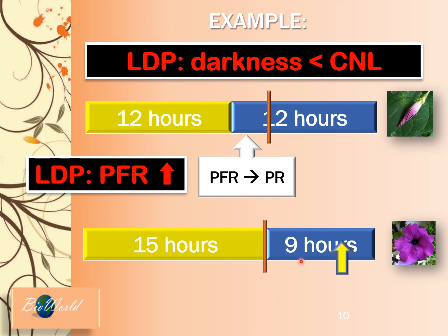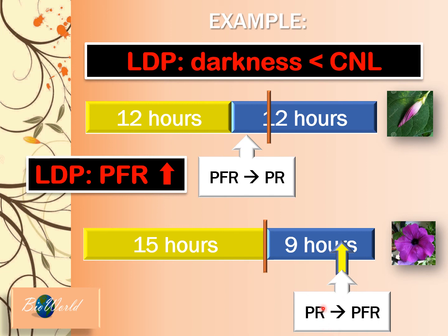Let's see over here — how is it that flowering occurs? So there's a flash of light. When a flash of light is inserted, phytochrome red will absorb red light and be converted to phytochrome far-red. Now the phytochrome far-red concentration increases and, following the rule for long-day plants, high concentration of phytochrome far-red will stimulate flowering.